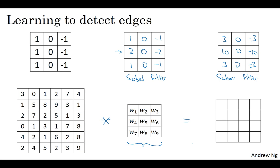What you see in later videos is that by just treating these nine numbers as parameters, backprop can choose to learn 1, 1, 1, 0, minus 1, minus 1 every once, or learn a Sobel filter, or learn a Scharr filter, or more likely learn something else that is even better at capturing the statistics of your data than any of these hand-coded filters.